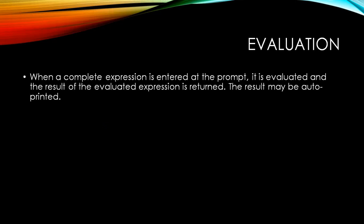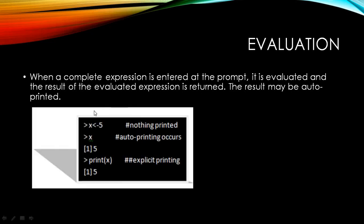This is just a repetition of what we have done. We will evaluate the inputs. We have learned to assign numeric values and character values. Now we would learn to evaluate those values. When a complete expression is entered at the prompt, it is evaluated and the result is returned — the result may be auto printed. Let's say I'm assigning the value for X to be five. For auto printing, I just type X and hit enter, and I get the auto-printed output as five. For explicit printing, I ask the R console to print X and the output is also five.